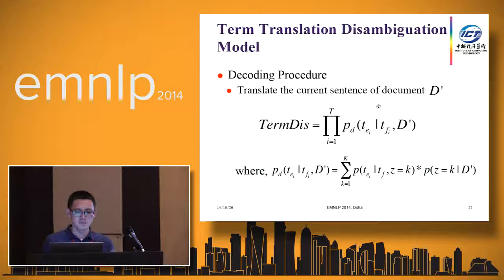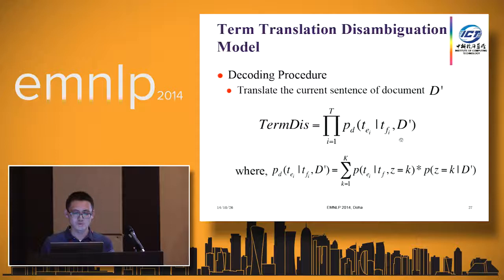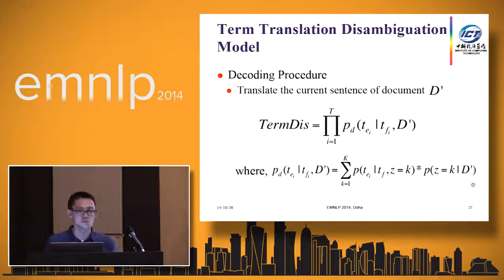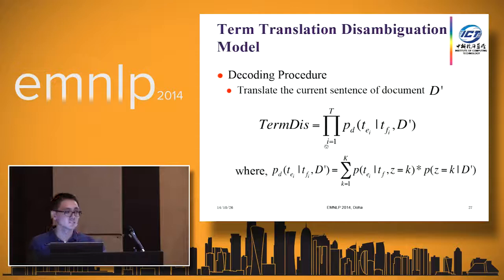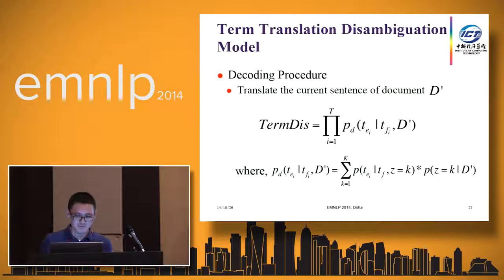During the decoding procedure, we use this to represent the translation distribution. For a source sentence which contains a source term, we compute the distribution of the target translation of that term conditioned on the document. To compute this, it is conditioned on the document topic, not directly on the document. So we can use the formula below. There are two parts: the first part is the topic-conditioned translation probability, and the second part is the document topic distribution, which we obtain from LDA. We add this model into the log-linear framework of machine translation as a feature, in order to select better translations for the source term that are appropriate for the domain according to the current document.